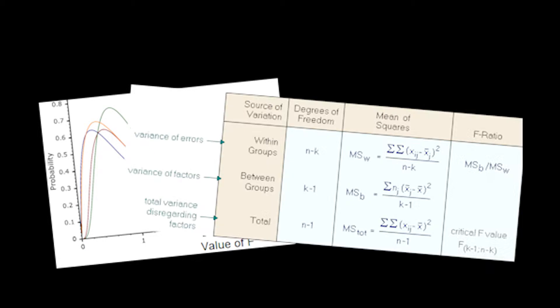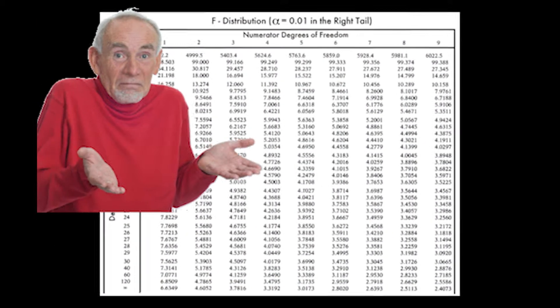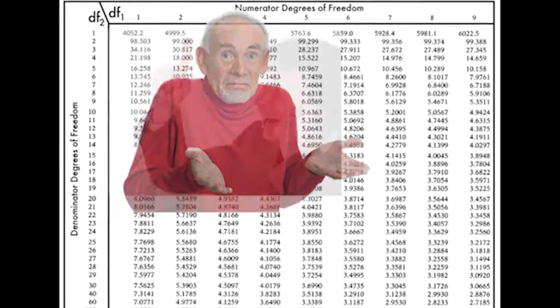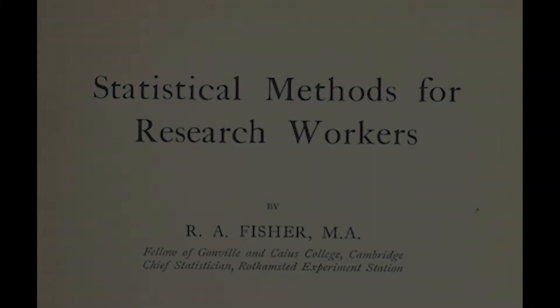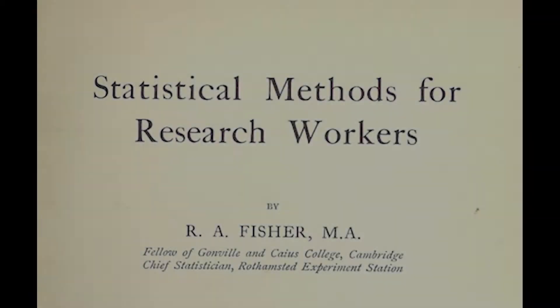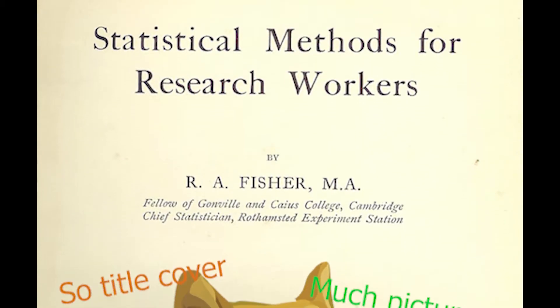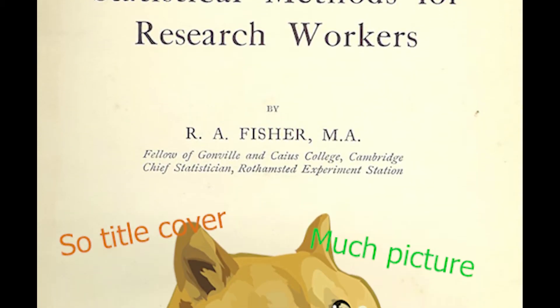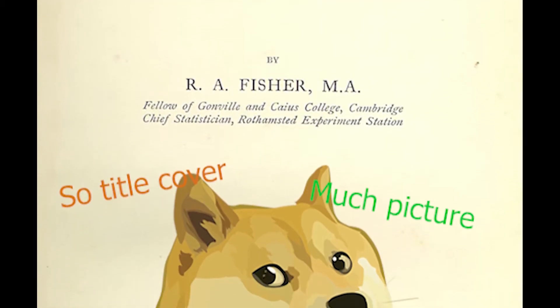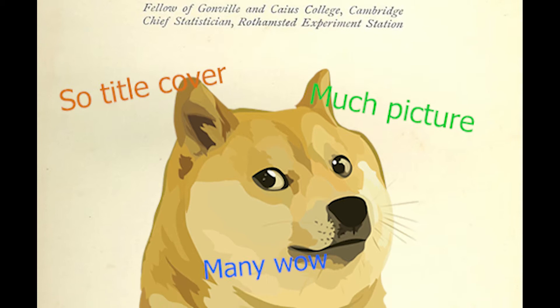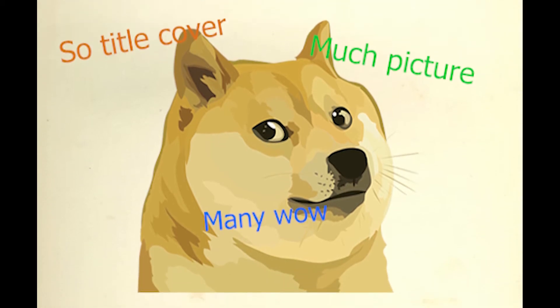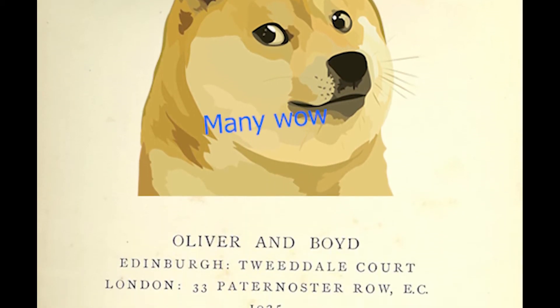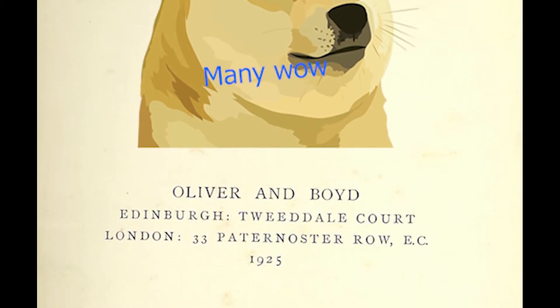Ronald Fisher created the F distribution in 1924, which is used to see whether two independent estimates of a population variance are homogeneous or not. In 1925, Fisher released his book Statistical Methods for Research Workers. By the time it was published, it received no positive feedback. However, it was soon seen to innovate statistics and biology.